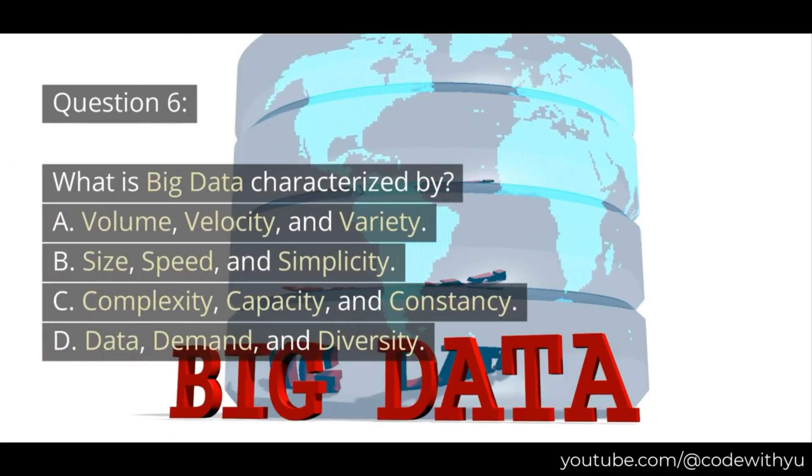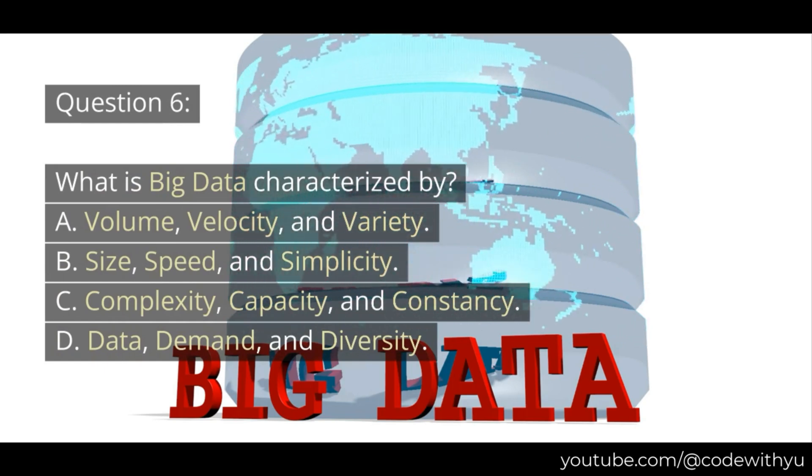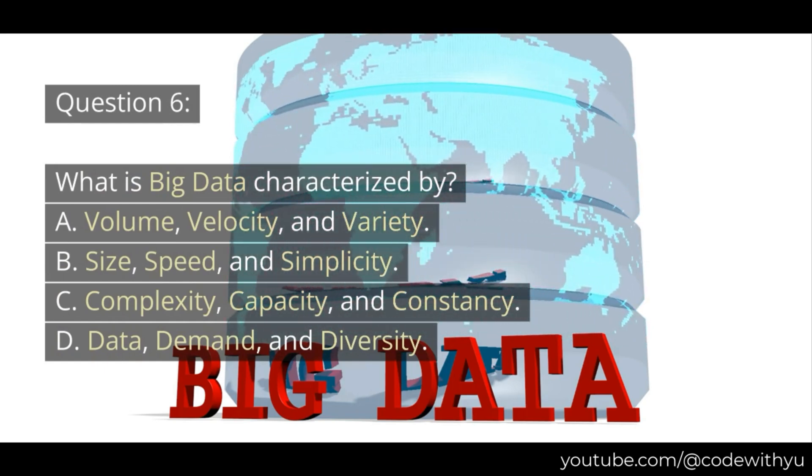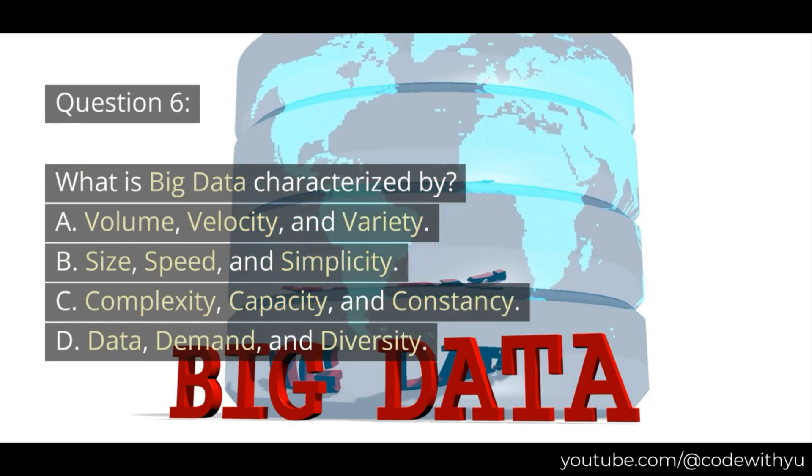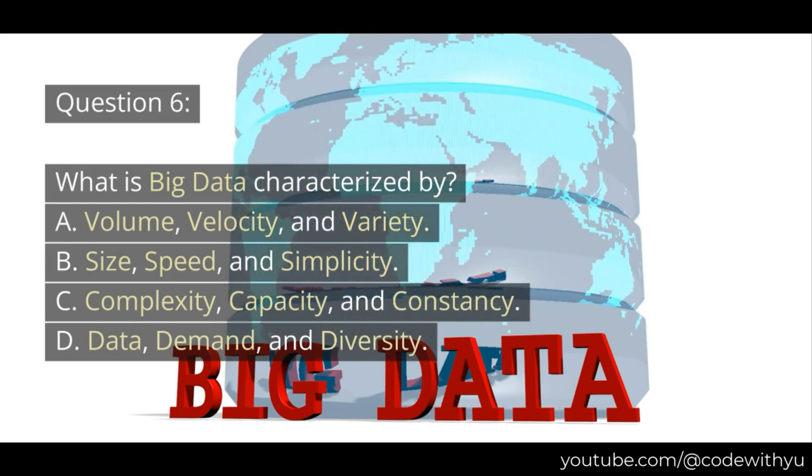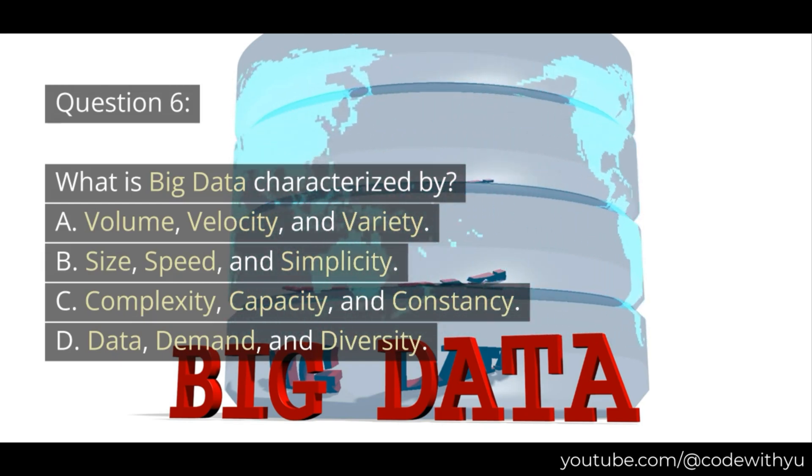Question 6. What is big data characterized by? A. Volume, velocity, and variety. B. Size, speed, and simplicity. C. Complexity, capacity, and constancy. D. Data, demand, and diversity.